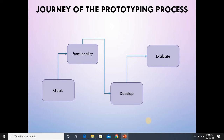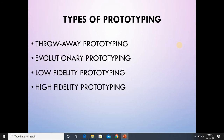In general, the prototyping procedure starts from setting a goal before going to design, defining the functionality of those goals, the development process, and finally evaluating the design before implementation. The types of prototyping include throwaway prototyping, evolutionary prototyping, low fidelity prototyping, and high fidelity prototyping — the latter two having been discussed previously.